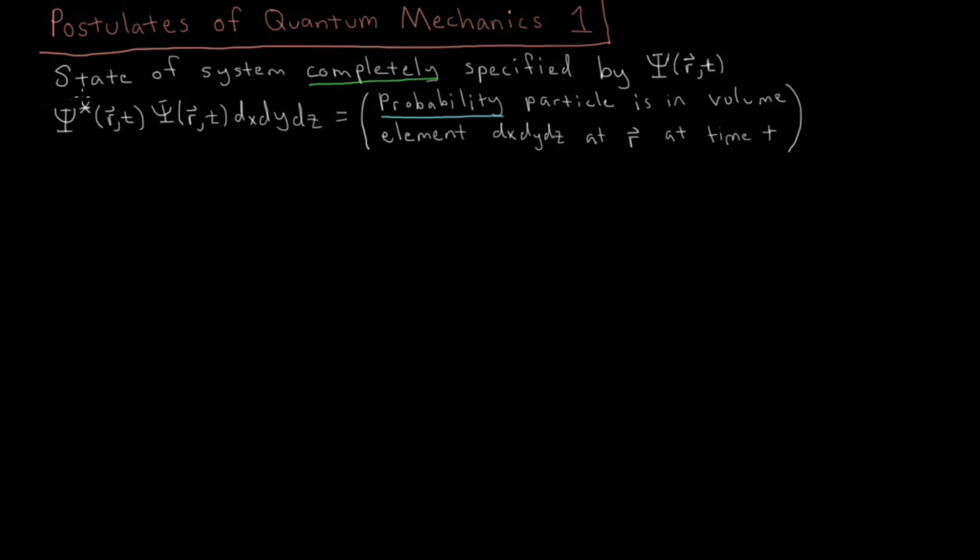So this means that the wave function tells us everything there is to know about a system, and it has a property that the wave function times its complex conjugate gives us a probability of where things are likely to be located in space.